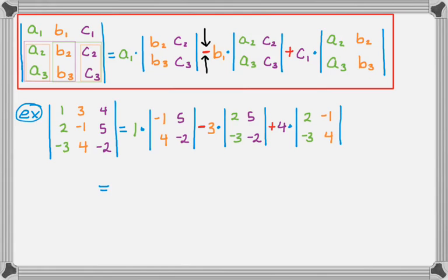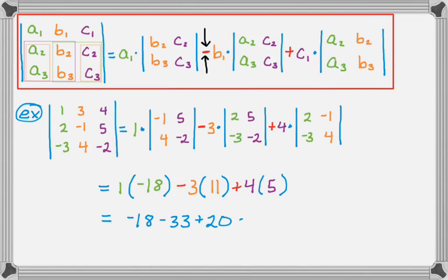Now we just calculate a bunch of things. It's 1, and then it's negative 1 times negative 2 minus 5 times 4, so I get negative 18. And then minus 3. 2 times negative 2 minus 5 times negative 3, that's going to be 11. And then plus 4. 2 times 4 minus negative 1 times negative 3, so it gives me 5. You can work that out, and so I get negative 31. That's the determinant of that 3x3 matrix.